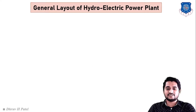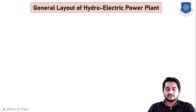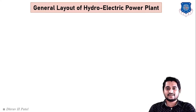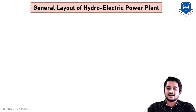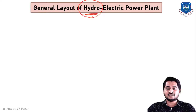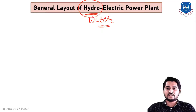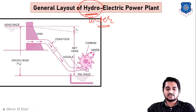Let us start with the general layout of a hydroelectric power plant. A power plant is the place where energy or power is generated. A hydroelectric power plant generates power using water.